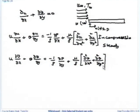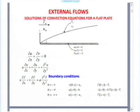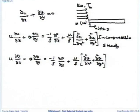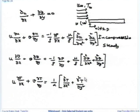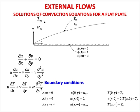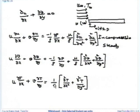Professor Arun has already mentioned the energy equation. The energy equation is: u del T by del x plus v del T by del y equal to alpha into del squared T by del x squared plus del squared T by del y squared. I made a mistake — this should be alpha, not 1 by alpha, where alpha equals k by rho Cp.